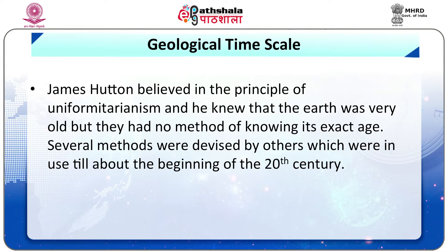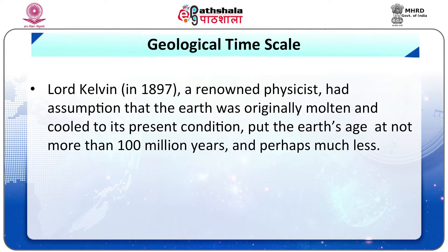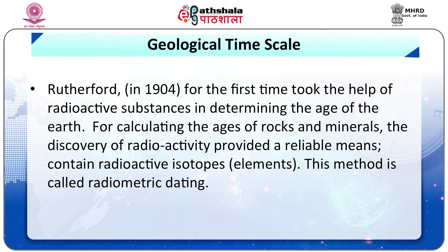James Hutton believed in the principle of uniformitarianism and he knew that the earth was very old but they had no method of knowing its exact age. Several methods were devised by others which were in use till about the beginning of the 20th century. Lord Kelvin, in 1897, a renowned physicist, had the assumption that the earth was originally molten and cooled to its present condition, putting the earth's age at not more than 100 million years. Rutherford, in 1904, for the first time took the help of radioactive substances in determining the age of the earth. This method is called radiometric dating.